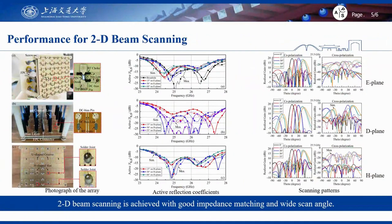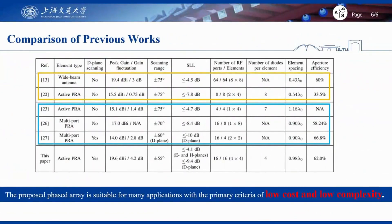Finally, the proposed array is measured with a scanning range from −55 degrees to +55 degrees on both the E-plane and H-plane. Compared with previous works with the same aperture, similar performance can be provided by the proposed phased array with large element spacing based on the pattern-reconfigurable antenna element. Thus, the complexity and cost are reduced for a two-dimensional scanning phased array, making it suitable for many applications with the primary criteria of low cost and low complexity.